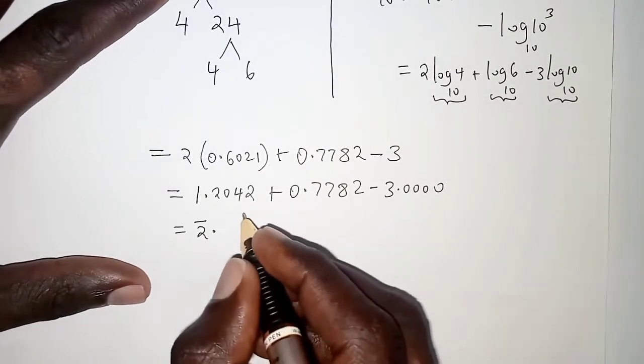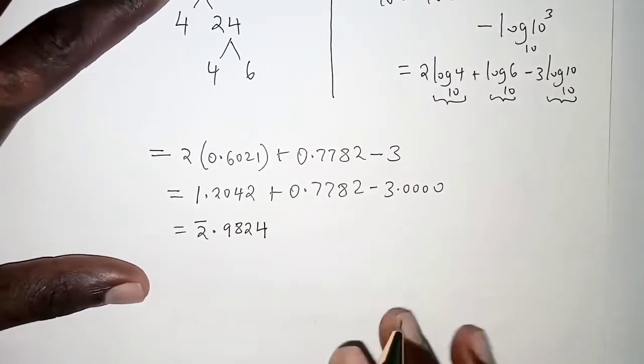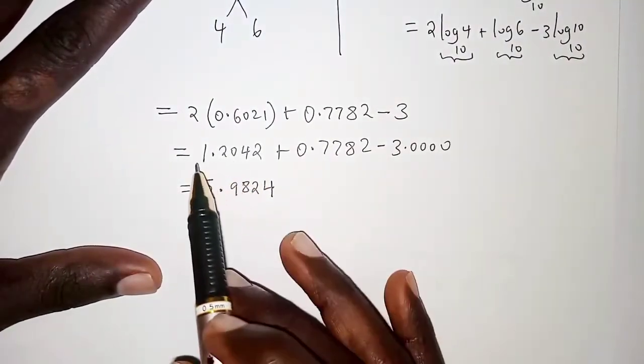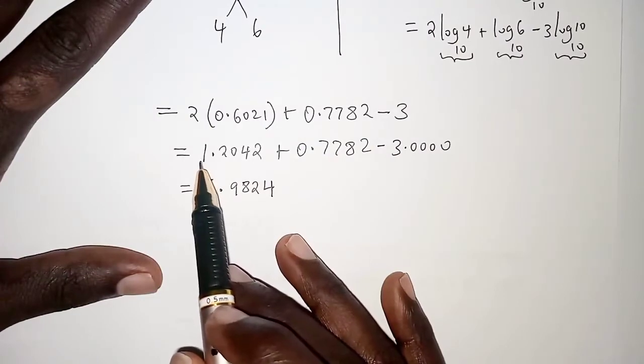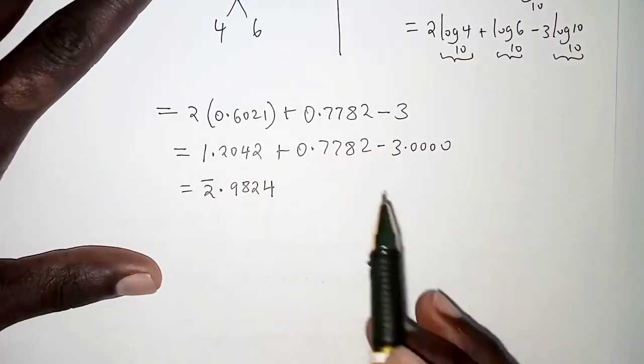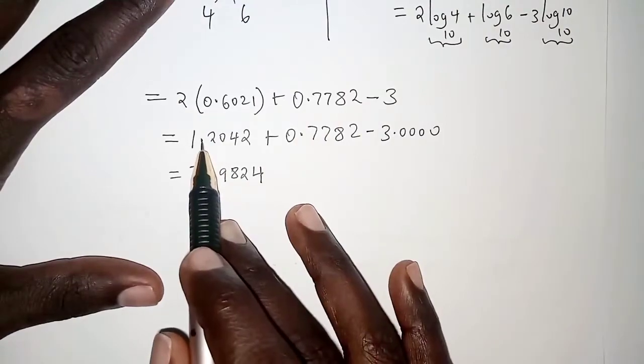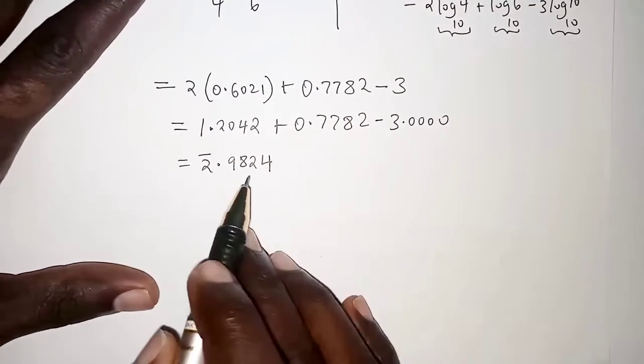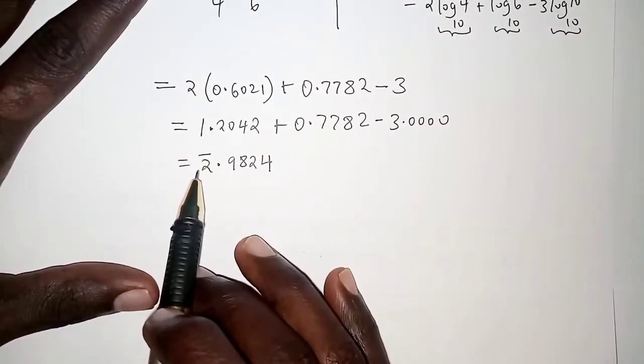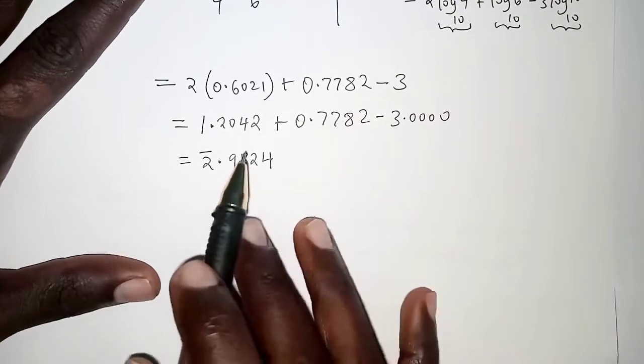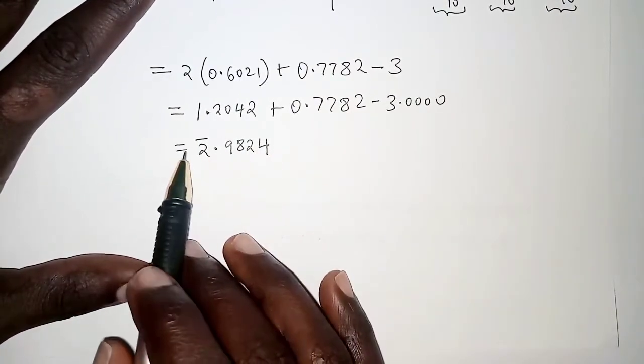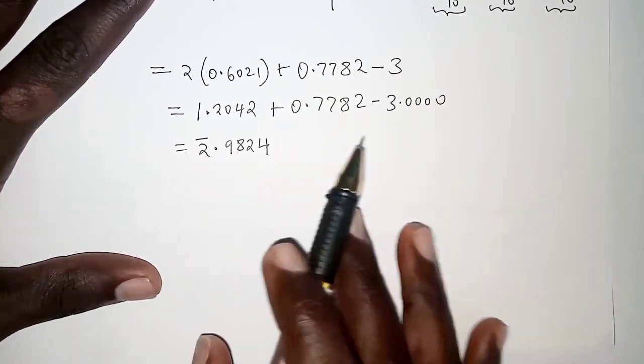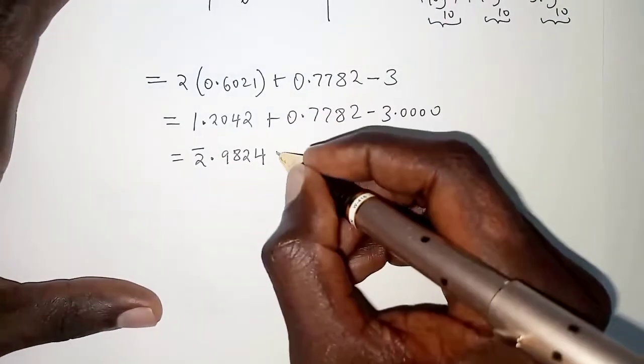I've added the characteristics separately (1 + 0 - 3) and the mantissa (after decimal points) separately. For the characteristic we had -2, but for logarithms we write it as bar 2. So our final answer is bar 2.9824.